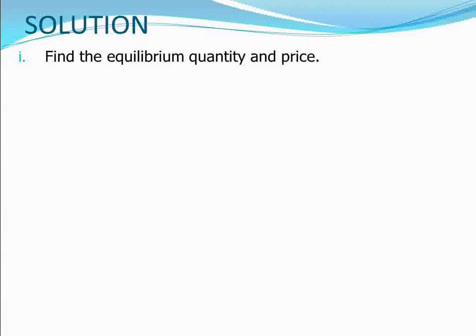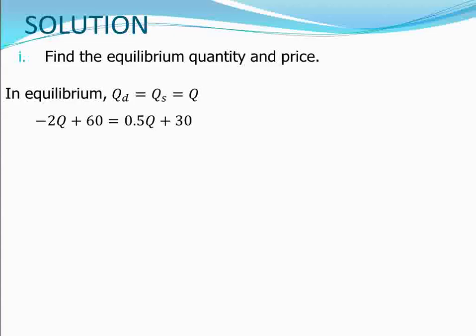To find the equilibrium price and quantity, you can try to solve first and then compare with the solutions I present. In equilibrium, quantity demanded equals quantity supplied, which equals quantity Q. This means we can substitute Q for both QD and QS in our functions. So we set the demand equal to the supply: -2Q + 60 = 0.5Q + 30.